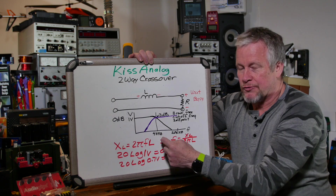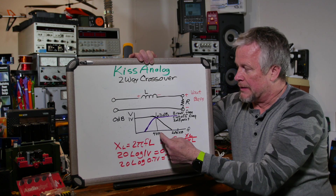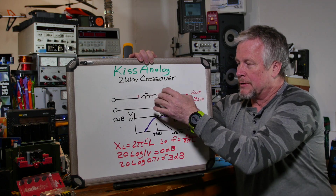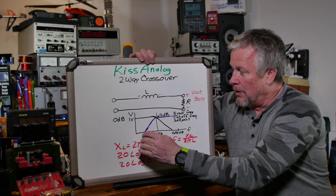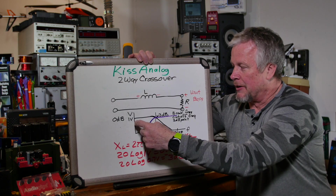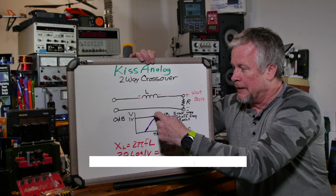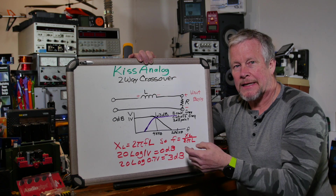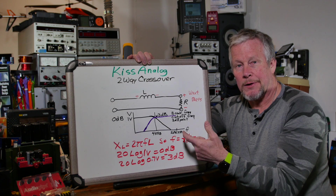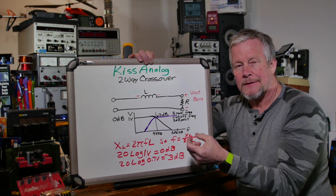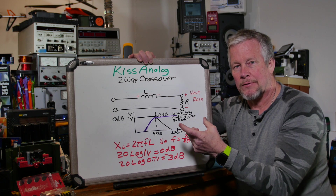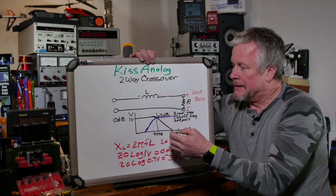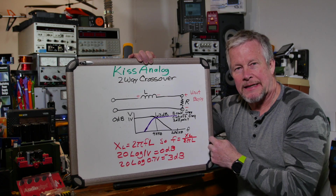Ideally the woofer response would come to 4k and drop straight off, while the purple tweeter line would come straight up and over. Ideally 1 volt goes to each, but they roll off. When you hit a pole in a filter you roll off at 20dB per decade, which is the same as 6dB per octave. A decade is 10 times the frequency — so if you're at 1k, a decade away is 10k. An octave is 2 times the frequency, so from 1k an octave is 2k.